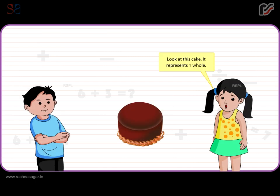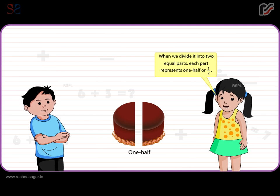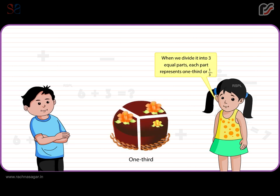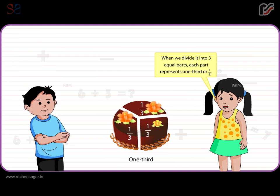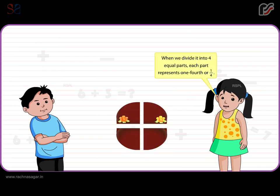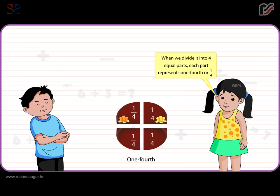Look at this cake. It represents one whole. When we divide it into two equal parts, each part represents one half or one by two. When we divide it into three equal parts, each part represents one third or one by three. When we divide it into four equal parts, each part represents one fourth or one by four.